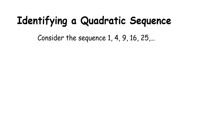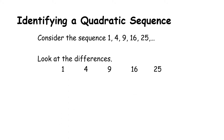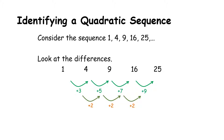Let's first look at how to identify a quadratic sequence. Consider the sequence 1, 4, 9, 16, 25. As covered in the previous video, we always look at the differences. The first differences are: add 3, add 5, add 7, add 9 — not common. So we calculate the second differences, which are the differences of the differences. We see a common second difference, and that common second difference is how we know a sequence is quadratic.